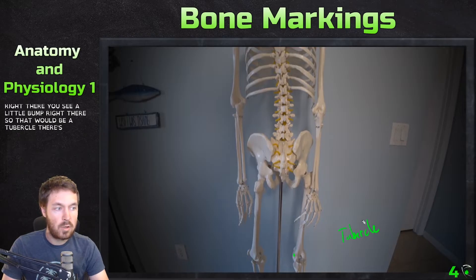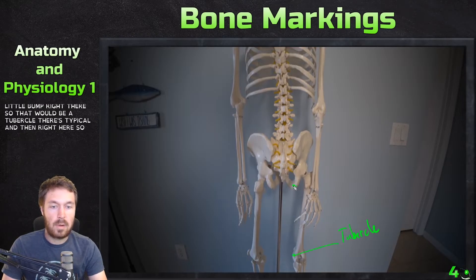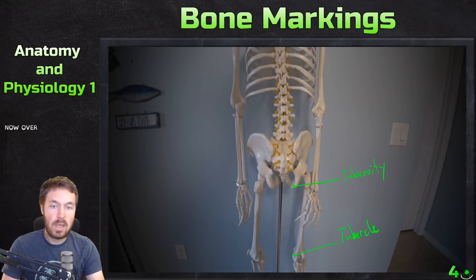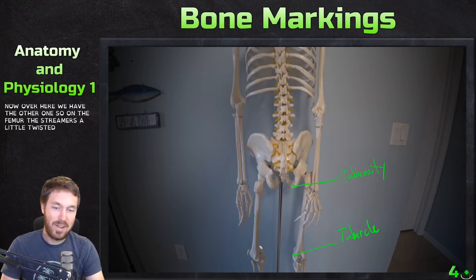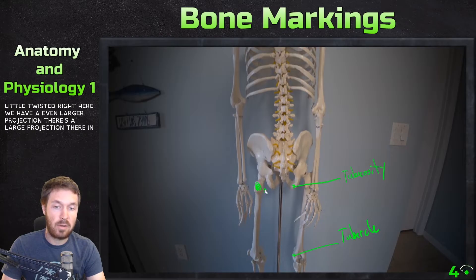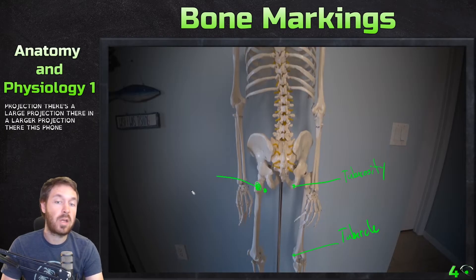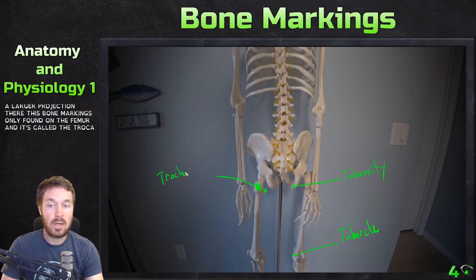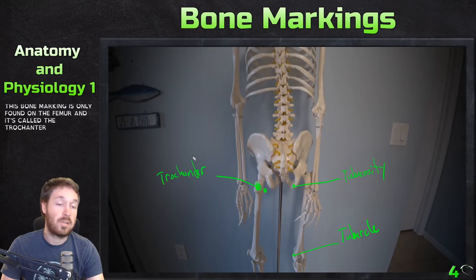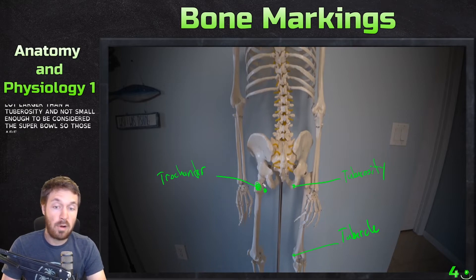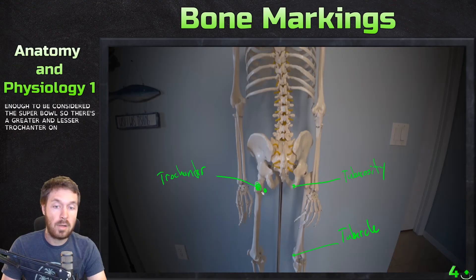So there's the tubercle, and then right here we have the tuberosity. Now over here on the femur — it's a little twisted — we have an even larger projection. This bone marking is only found on the femur, and it's called the trochanter, which is a lot larger than a tuberosity and not small enough to be considered a tubercle. There's a greater and lesser trochanter on the femur, and there's also a little line that connects each one.